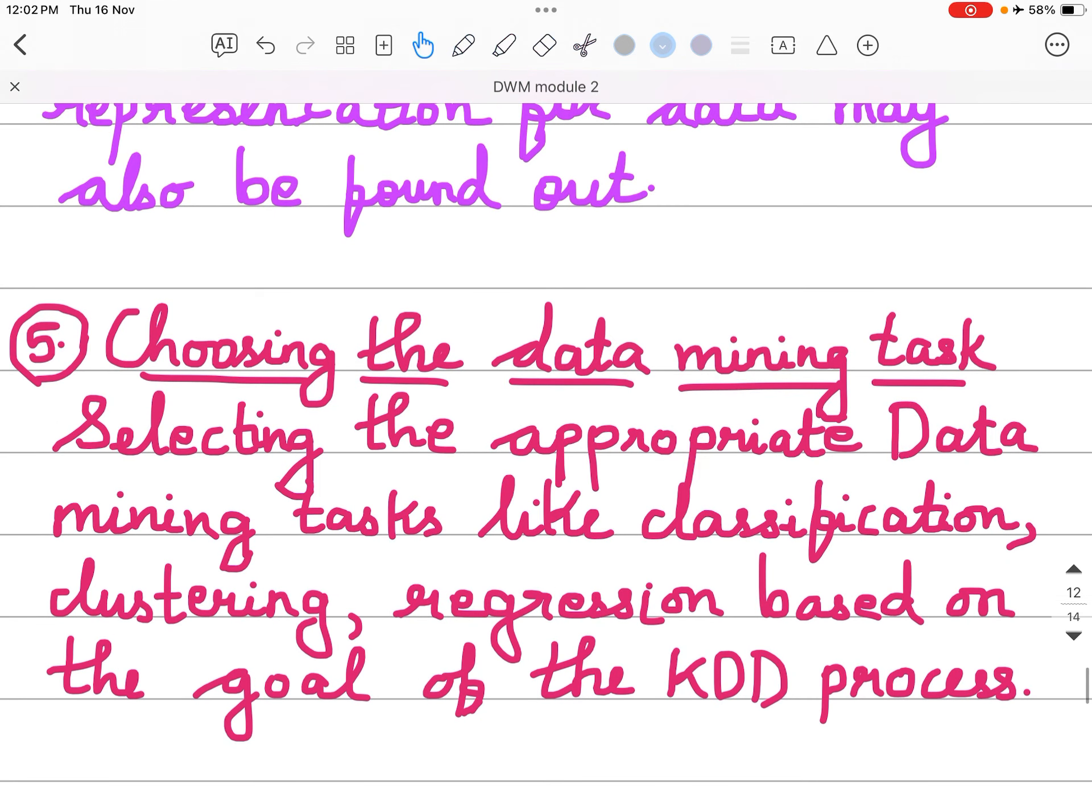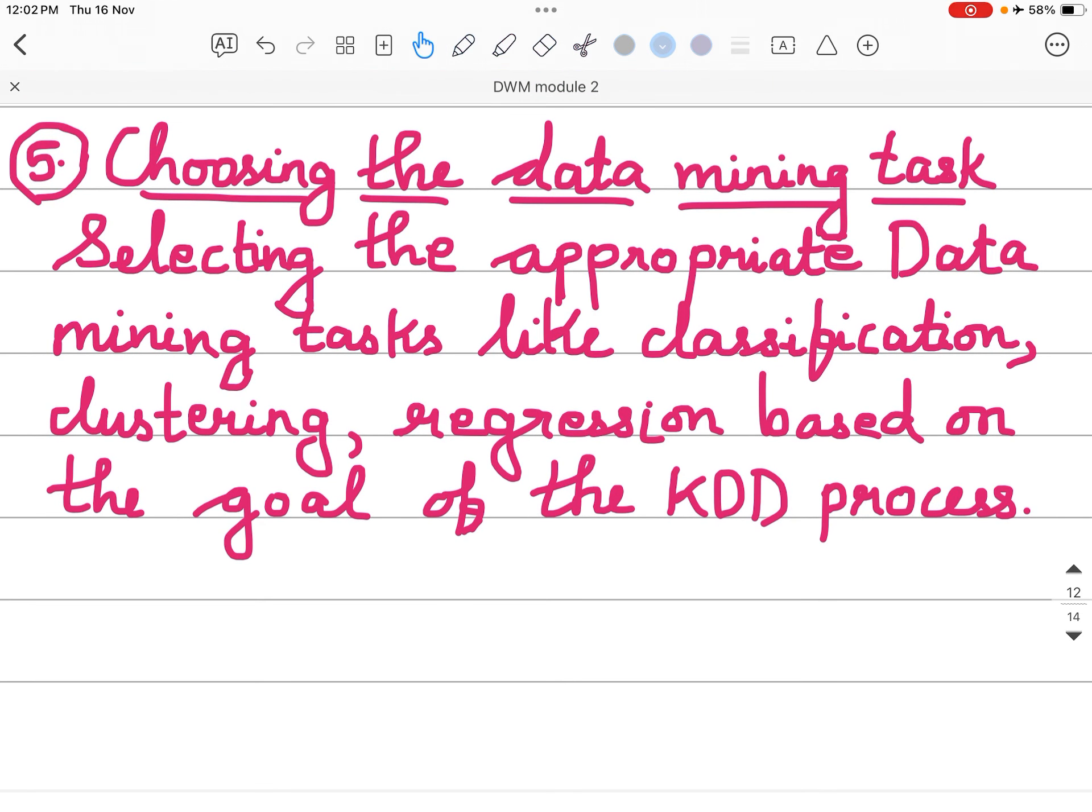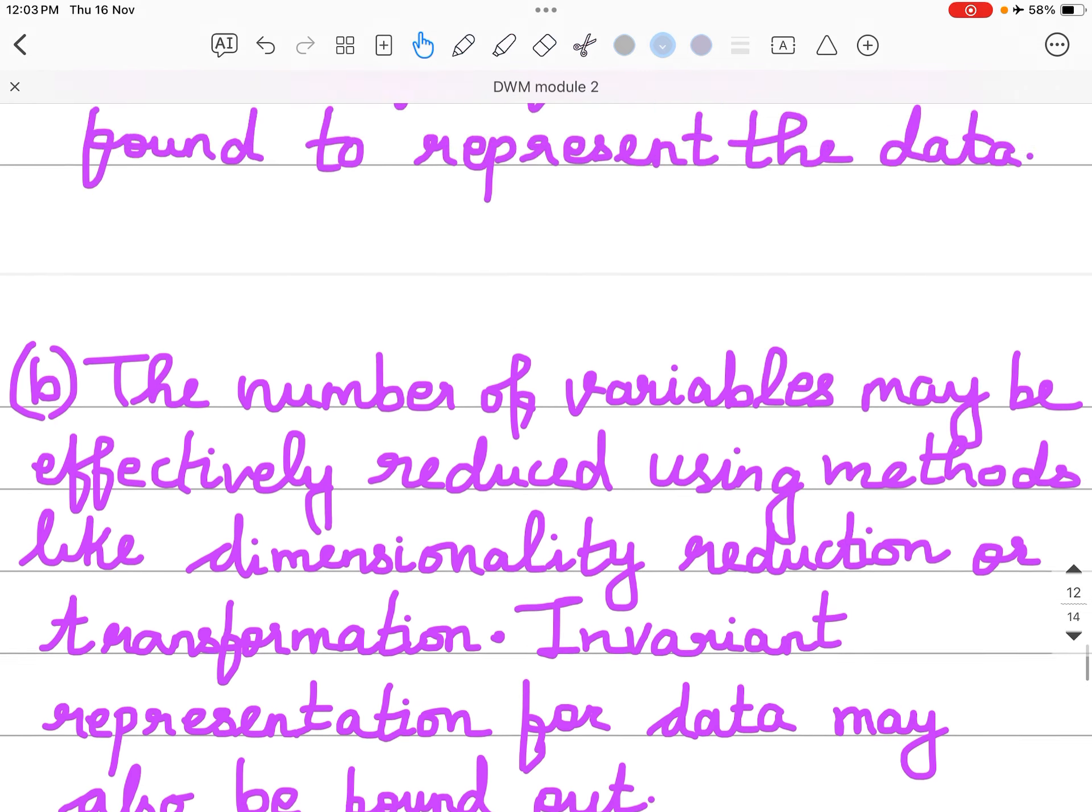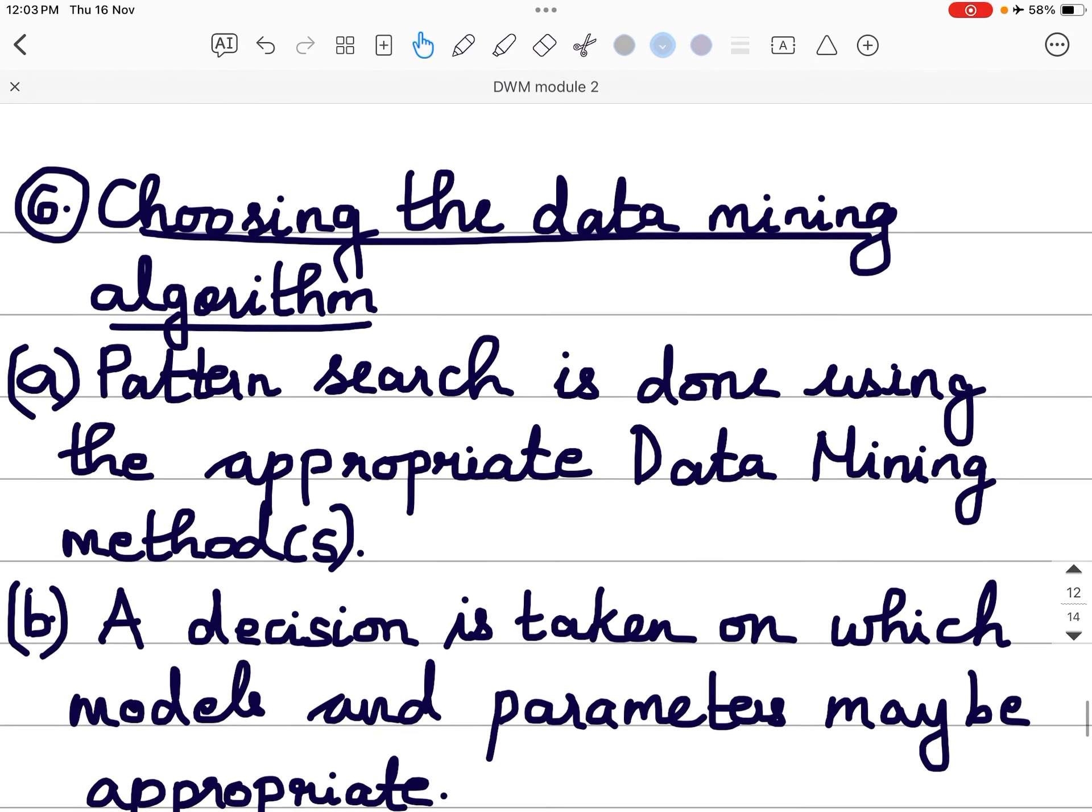Choose the data mining task. Selecting the appropriate data mining task like classification, clustering, regression based on the goal of the KDD process. So you have to choose the data mining task. Classification, clustering, regression, all these are the data mining tasks. According to your data, you have to choose the mining task very properly, very appropriately.